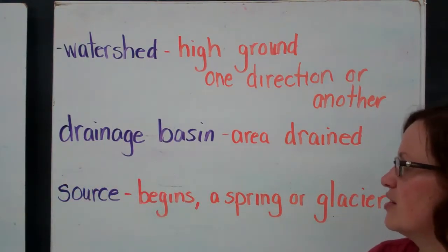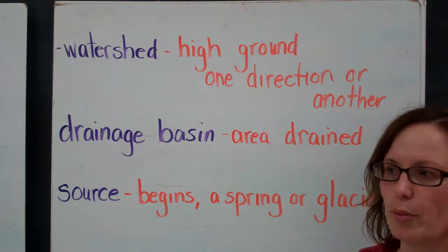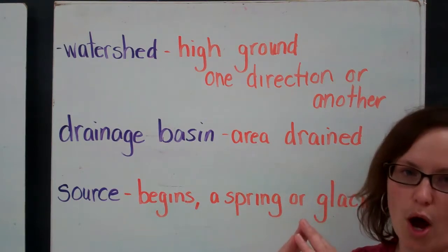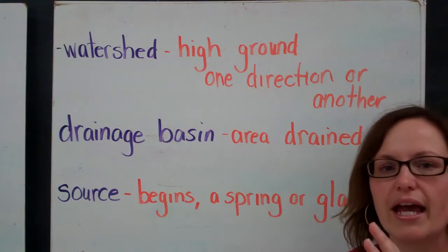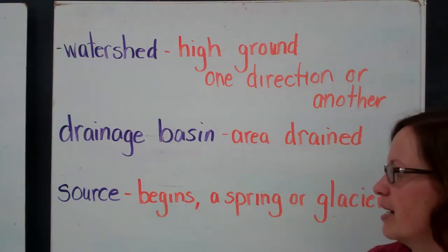Drainage Basin. This is the area that is normally drained by a river, so it's usually very close to the watershed because the water is moving away from that area and that's called the drainage basin.